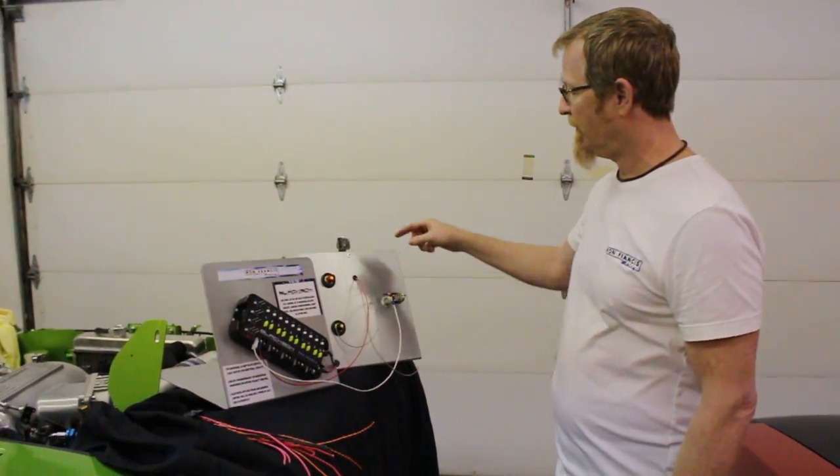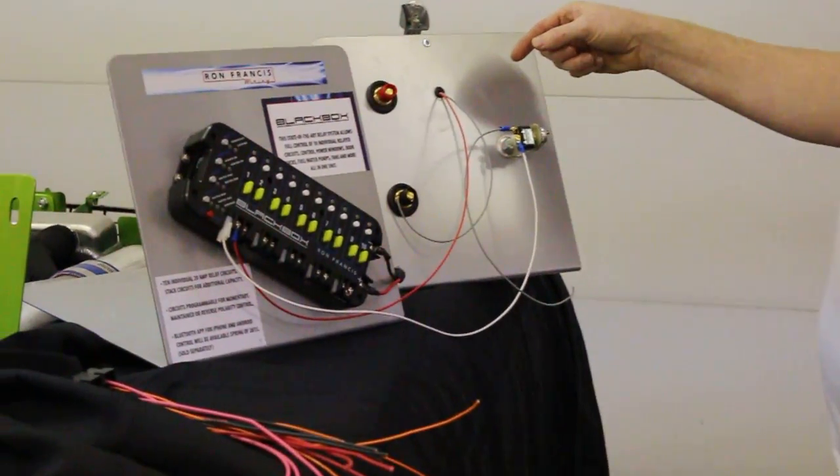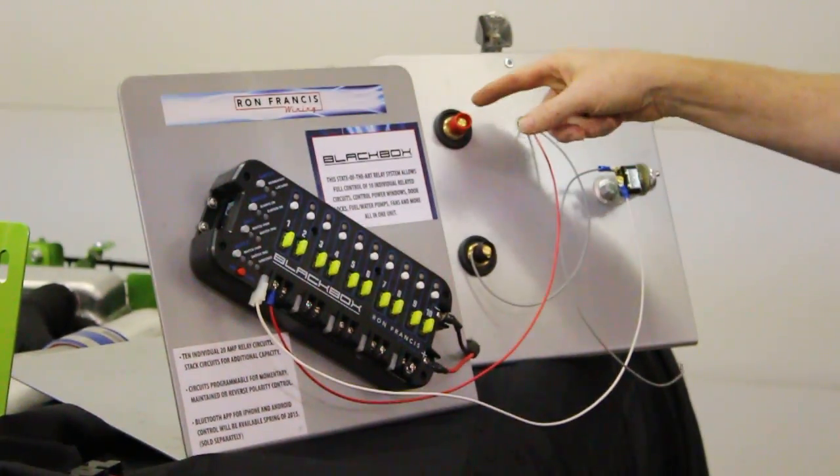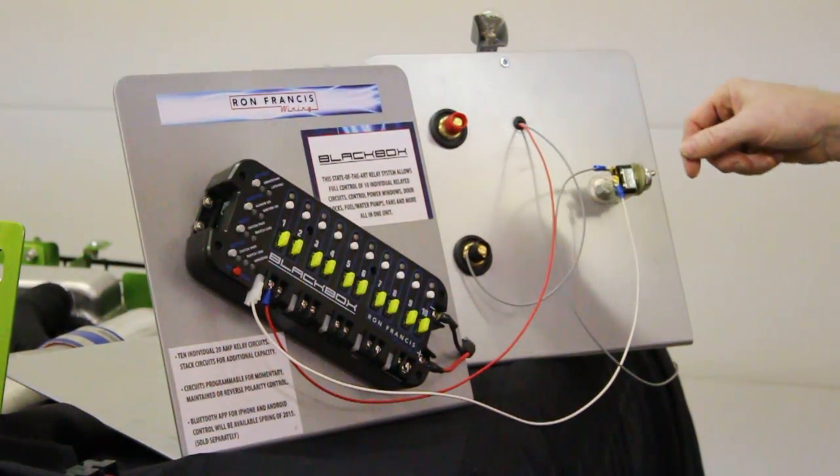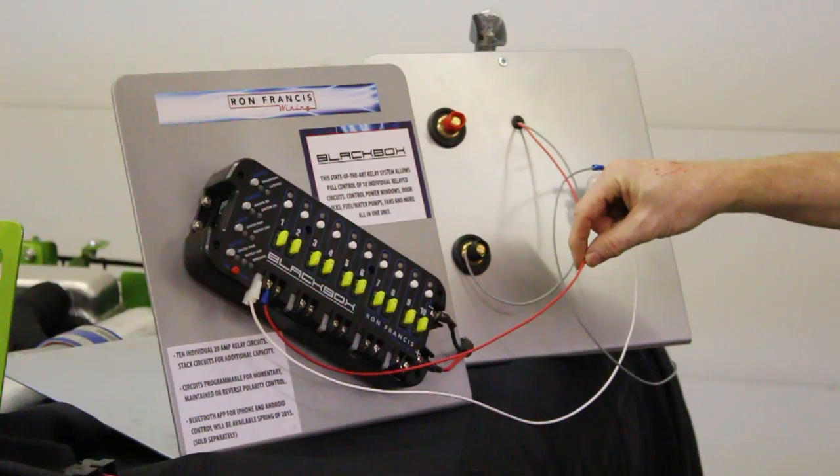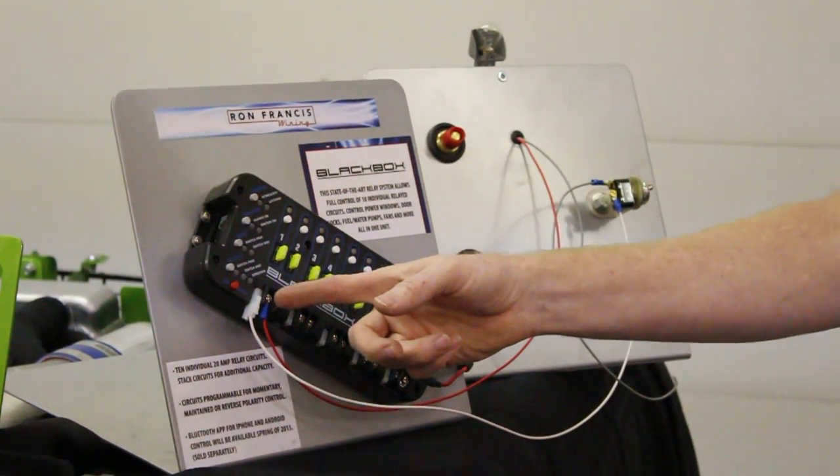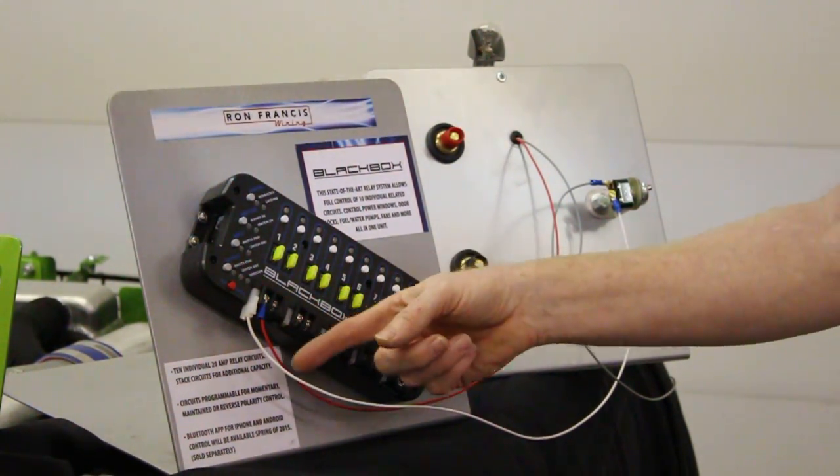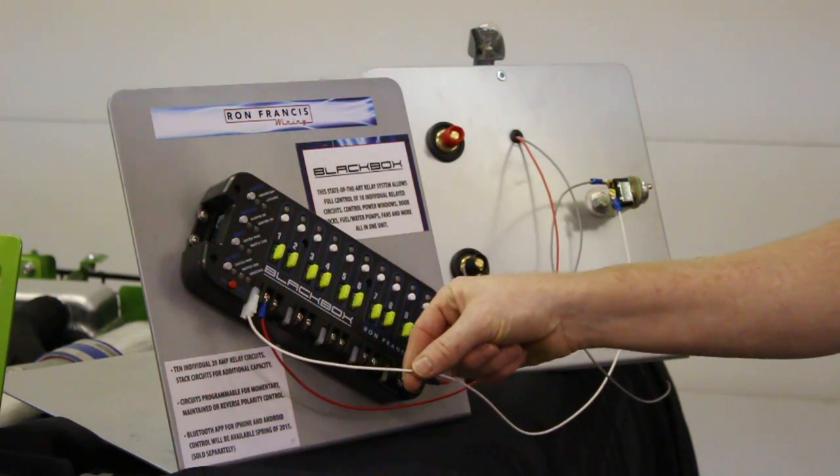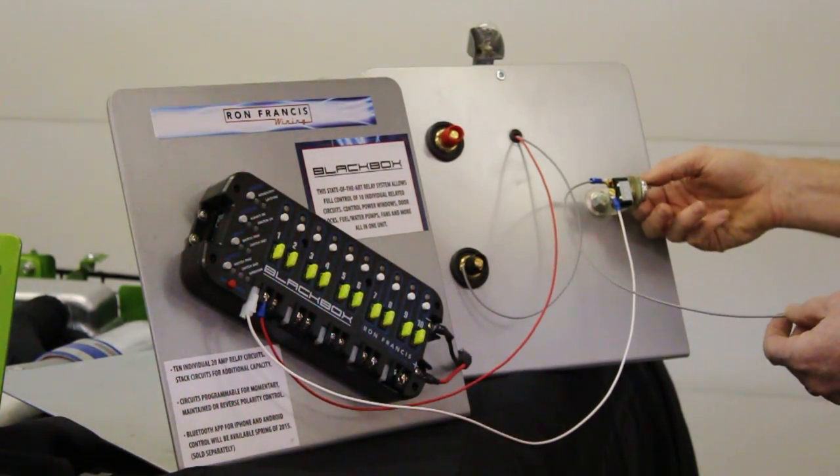So what we have here is a light ground going to a ground stud here. We also have a power stud up here. The red wire from the light is going to the output of circuit one. And then here we have the trigger for circuit one going to a simple toggle switch over here.